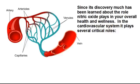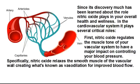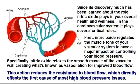Since its discovery, much has been learned about the role nitric oxide plays in your overall health and wellness. In the cardiovascular system, it plays several critical roles. First, nitric oxide regulates the muscle tone of your vascular system to have a major impact on controlling your blood pressure. Specifically, nitric oxide relaxes the smooth muscle of the vascular wall, creating what's known as vasodilation for improved blood flow. This action reduces the resistance to blood flow, which directly affects the first cause of most high blood pressure issues.